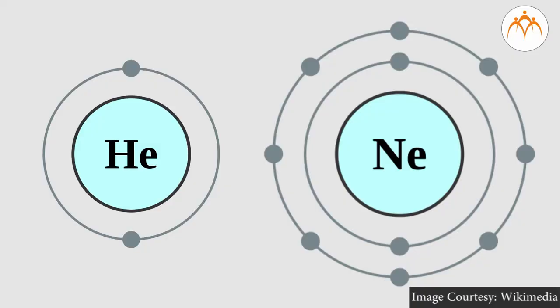For example, helium and neon have two electrons and eight electrons in their outermost orbit respectively. So they are chemically inert and have zero valency.